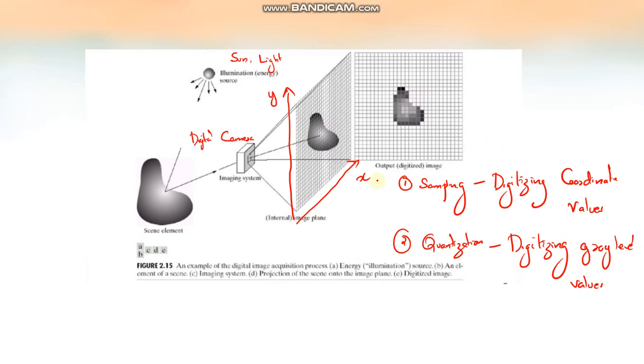So that is sampling and quantization. Once captured, the image, the x and y values, they are discrete and finite. So every cell, every cell has a discrete and finite gray level value also.